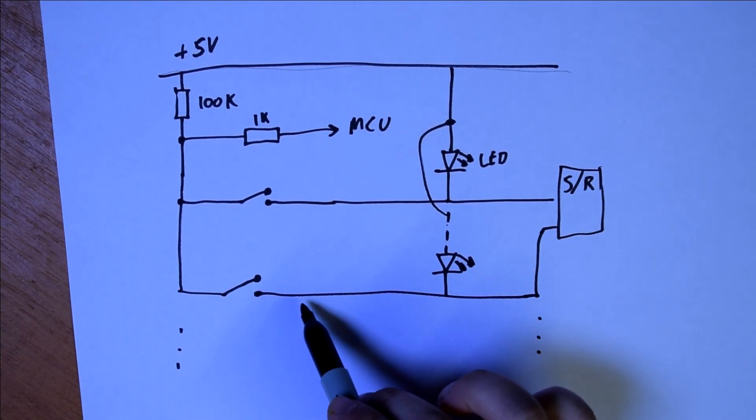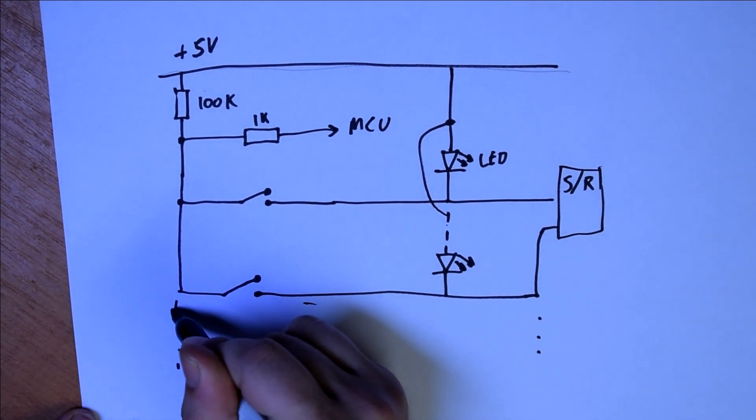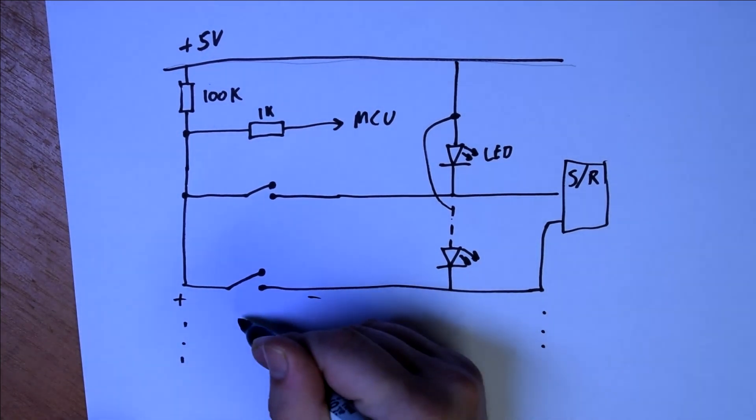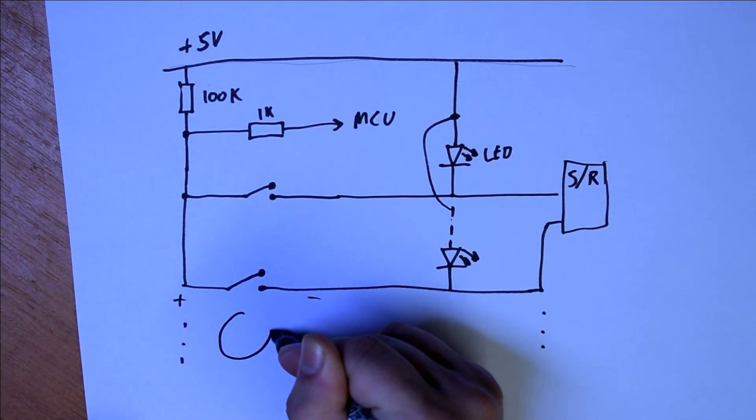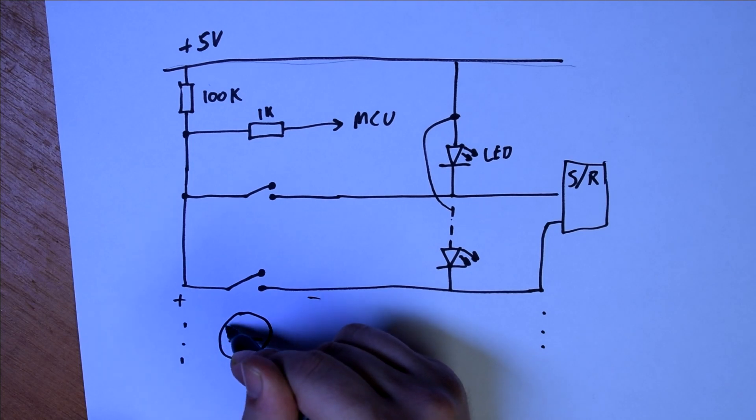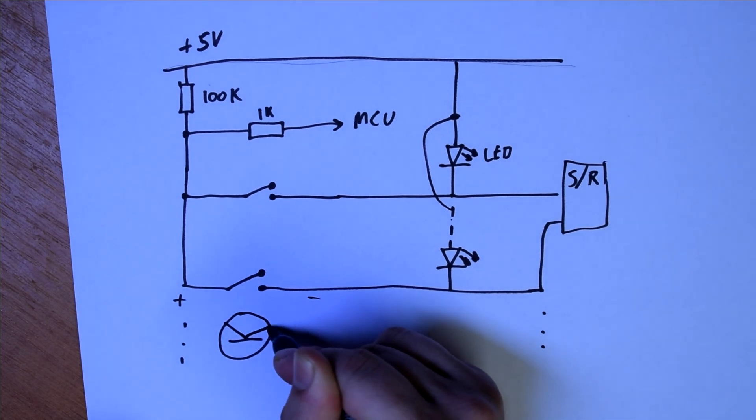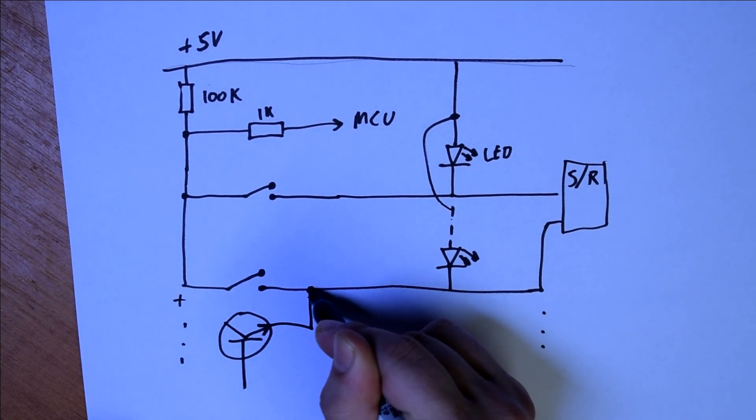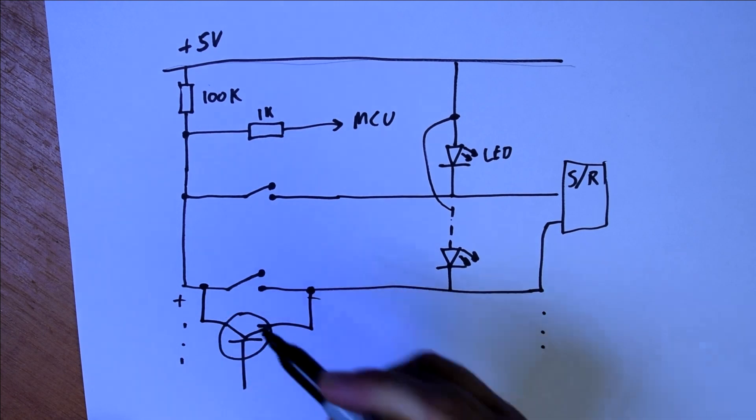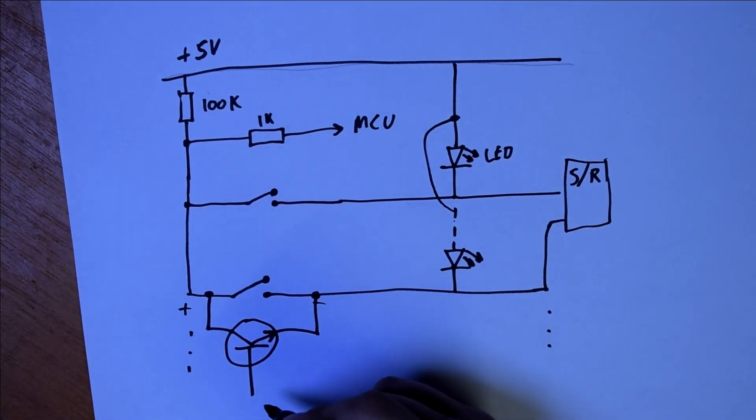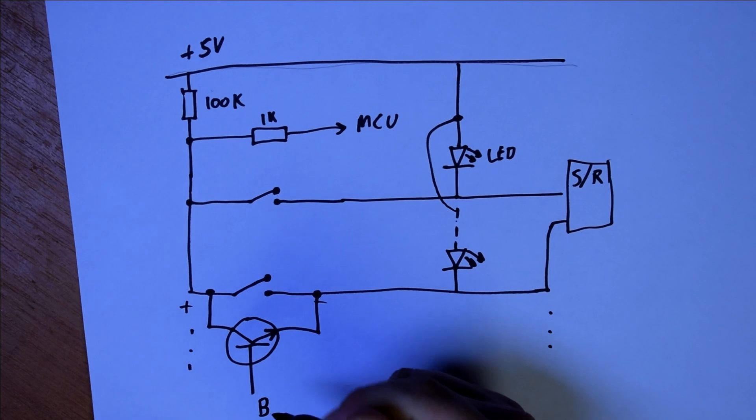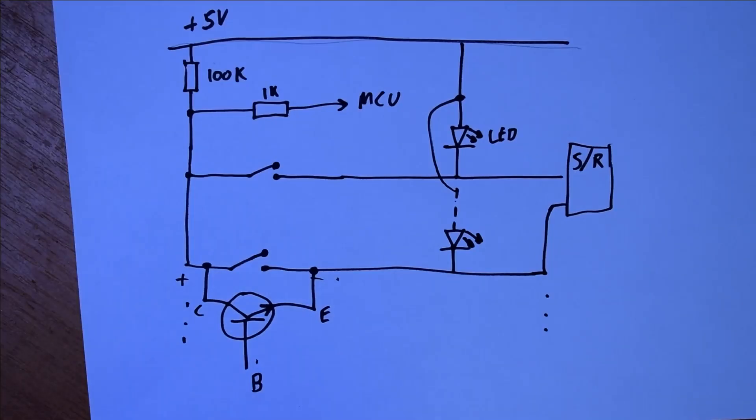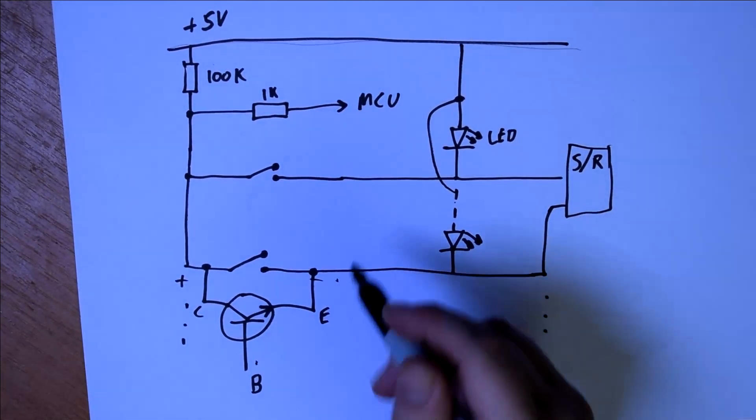What we can do is assume that when the shift register is scanning this one, this side is going to be negative and this side is going to be positive, and we can pop an NPN transistor across it.